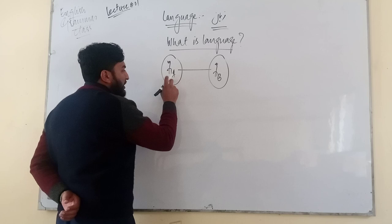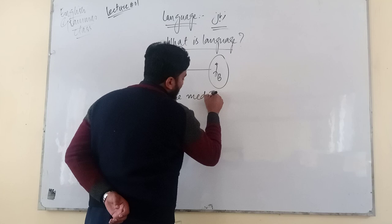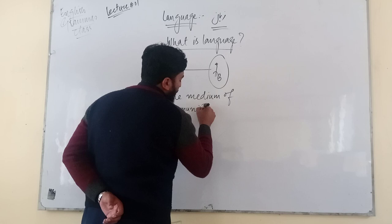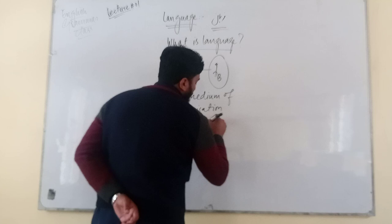But in English when we define language we come to know this is participant A, this is participant B. So what is the definition of language? It's so simple بہت آسان definition - we say the medium of communication between participant A and participant B.